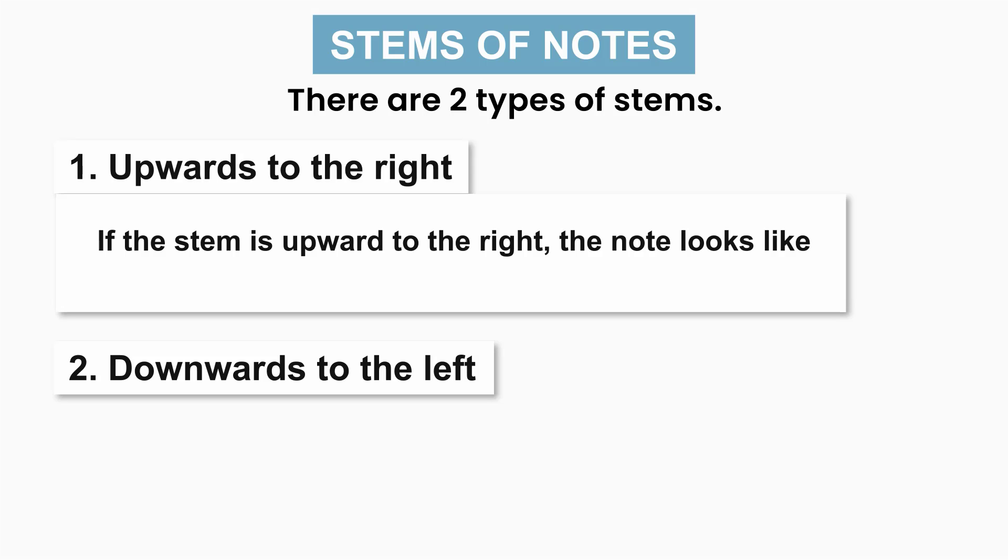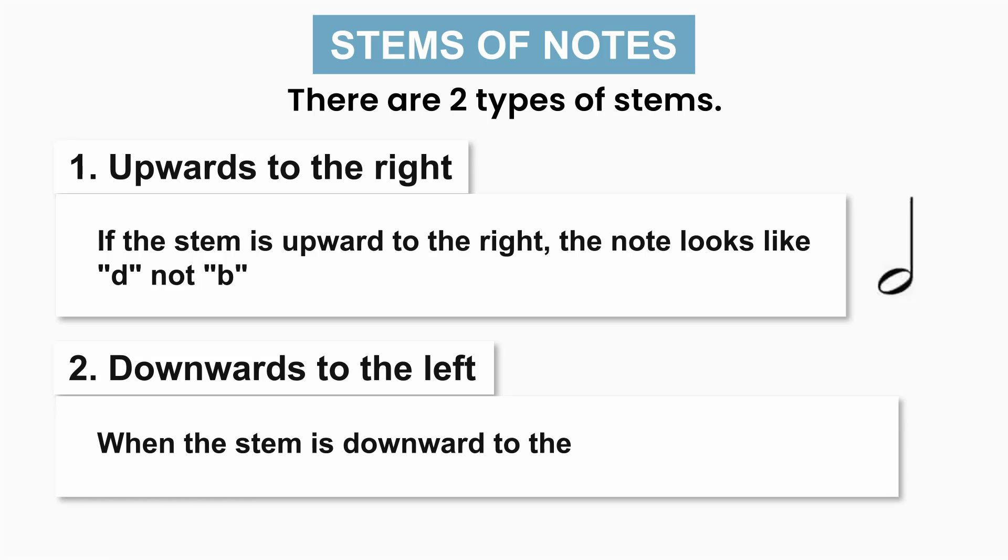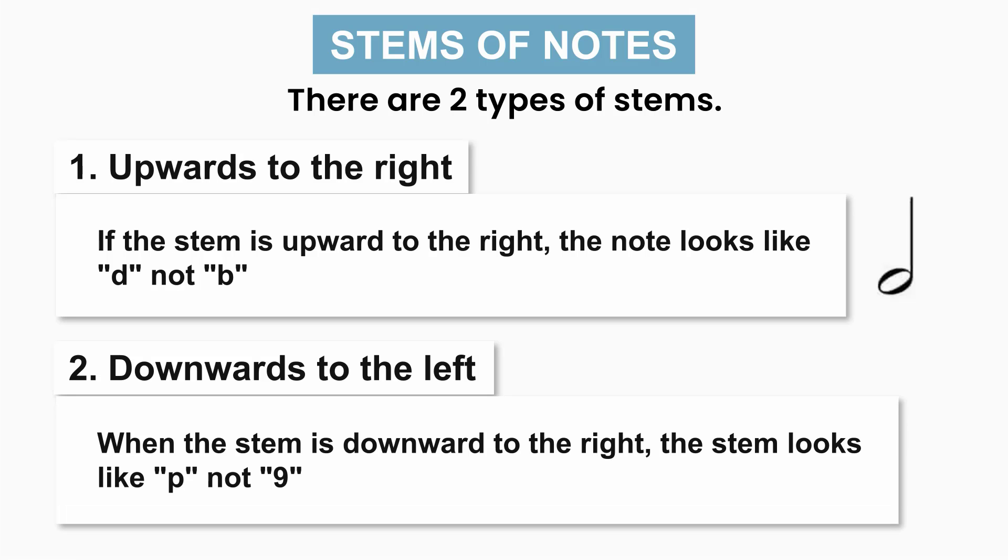If the stem is upward to the right, the note looks like letter D, not B. And when the stem is downward to the left, it looks like letter P, not 9.